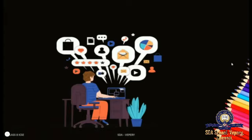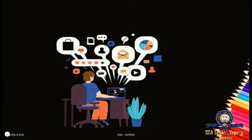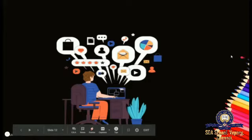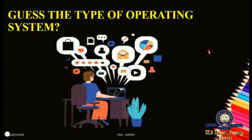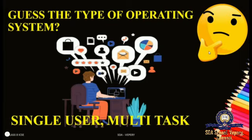Now guess what type of operating system this is. Previously you saw one picture for single user single task OS, and here there are multiple tasks - look at the computer screen, it has three windows open. He is working on three processes at that time. Only one person is performing all the tasks. What do we call that? Single user multitask operating system. Your guess is right - single user multitask operating system.